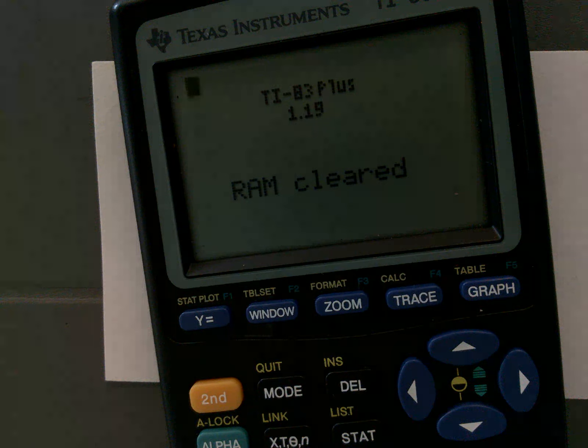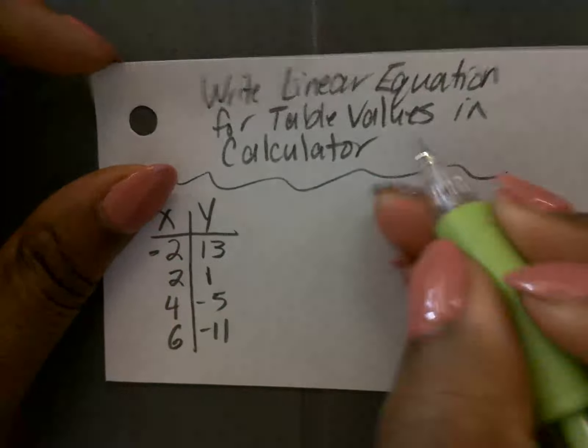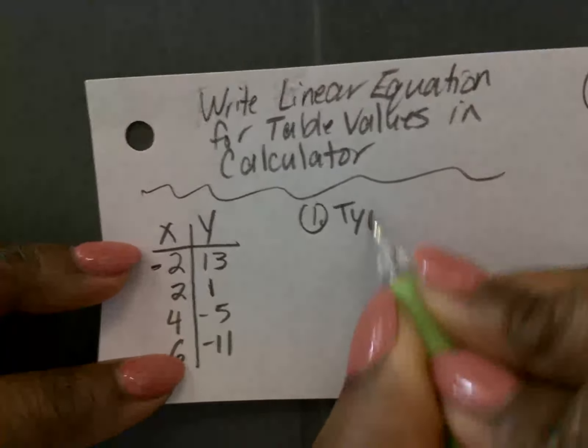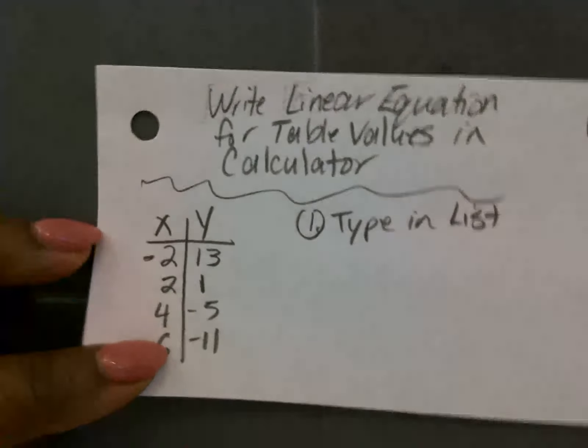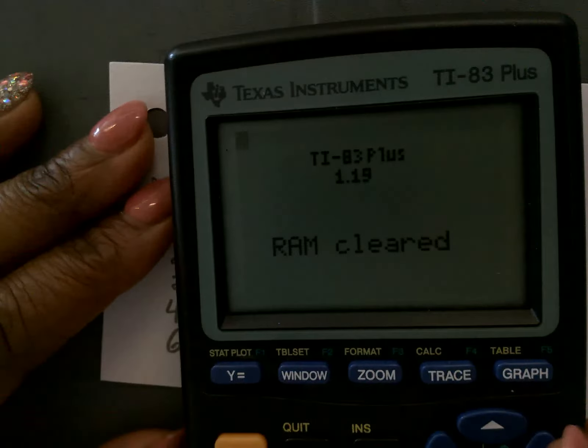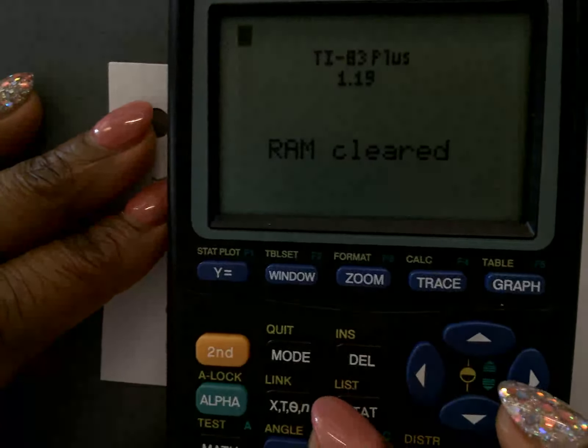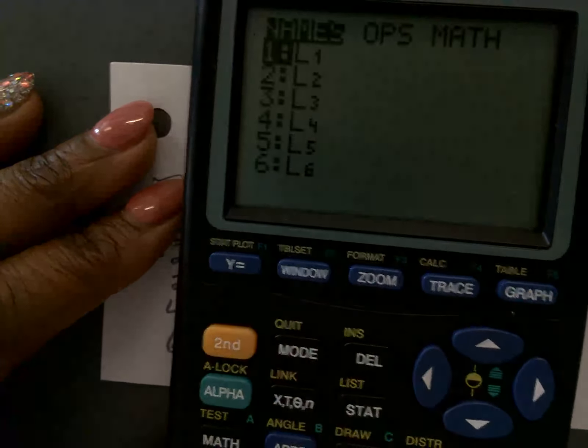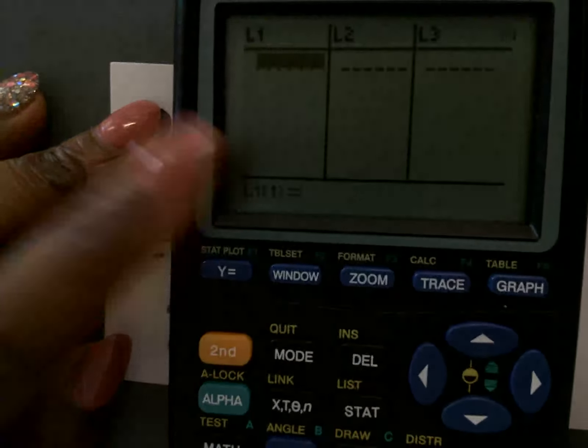All right, so now we are going to do the steps. We're going to write those out on what to do. The first thing we need to do is we need to type in the numbers. Type in list. To type in the list, what buttons do we press? Okay, somebody says second stat. Does that work? Second stat? Nope.